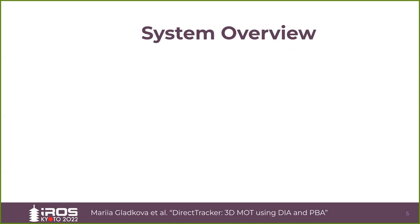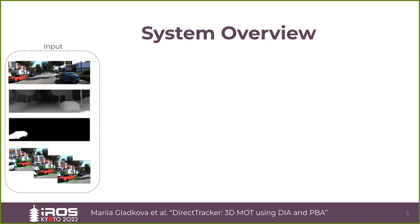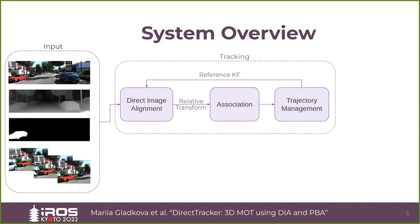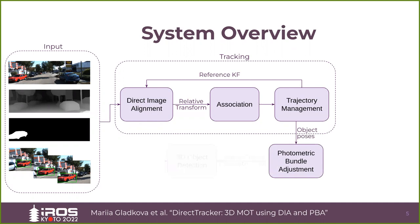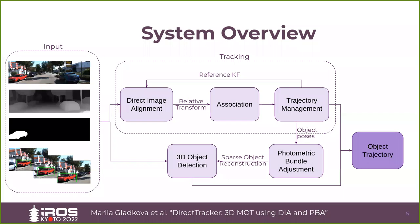In this slide, we demonstrate the proposed pipeline for a single object. Given an RGBD input along with the object segmentation masks, we directly track the object in 3D by warping them using direct image alignment, and associate a consistent object ID using the Hungarian algorithm. The trajectory management orchestrates the life-death trajectory cycle and maintains the keyframe data, which is utilized by both direct alignment and object-based windowed bundle adjustment components. Our 3D object detector uses only 2D model detections and sparse object reconstruction in a canonical keyframe to localize the object with respect to the camera coordinate system. This way, our method jointly achieves 3D detection and tracking using 2D information only.